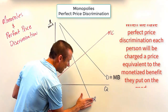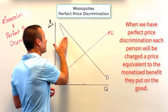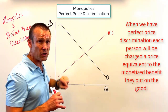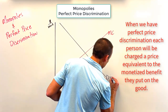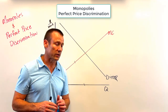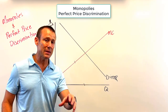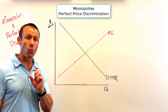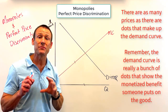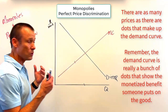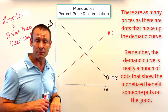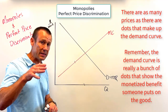So the price is going to be those dots that make up the demand curve. With perfect price discrimination, you charge each person a different price equal to the benefit they get from the good. This means the demand curve becomes the marginal revenue curve. You'll probably never be asked to put a single price on the vertical axis because the price is different for each person — there are as many prices as there are dots making up the demand curve.